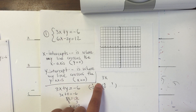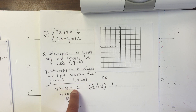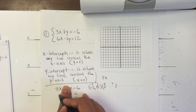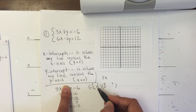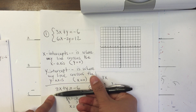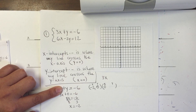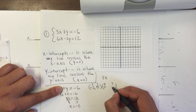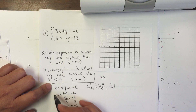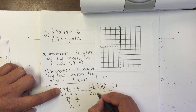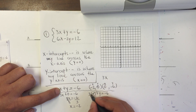An easy shortcut is that since it's in standard form — meaning ax plus by equals c — if y is 0, I can just cover the y term and divide by 3. Negative 6 divided by 3 is negative 2, without having to do all that work. For the y-intercept, if x is 0, then 3 times 0 disappears, and y equals negative 6. If you want to show your work: 3 times 0 plus y equals negative 6, which gives y equals negative 6.